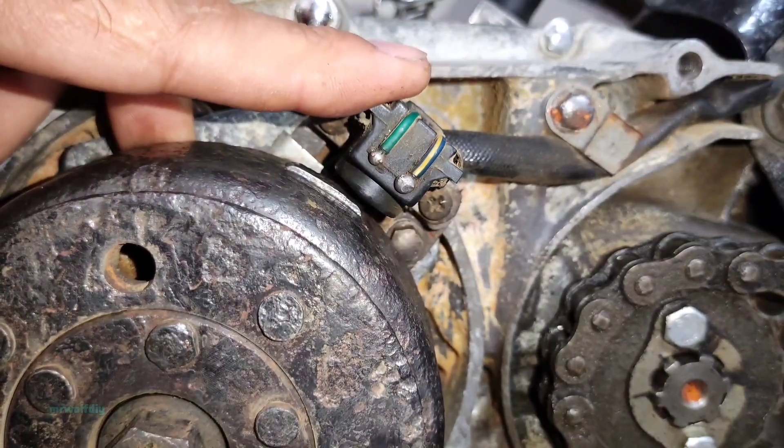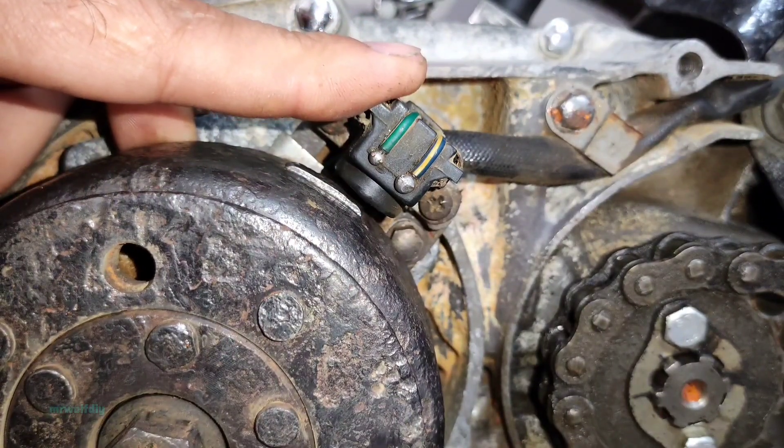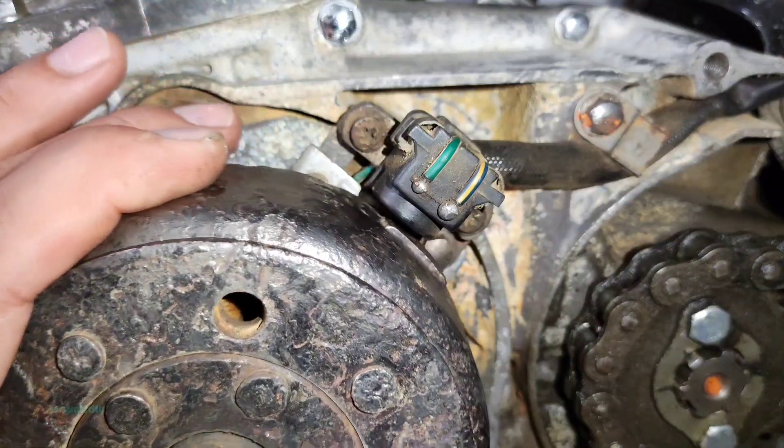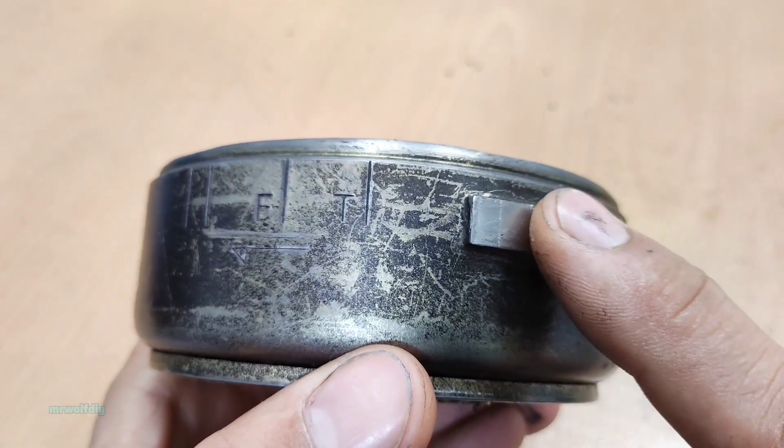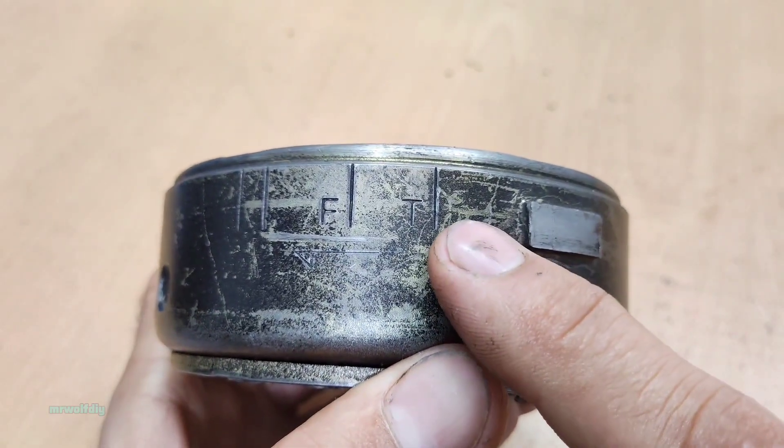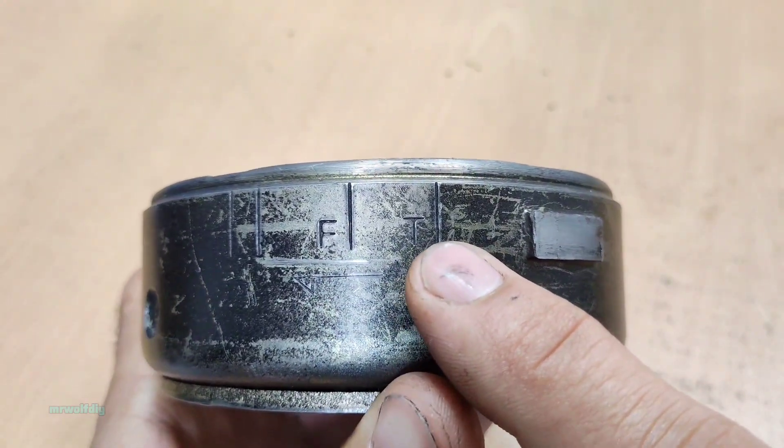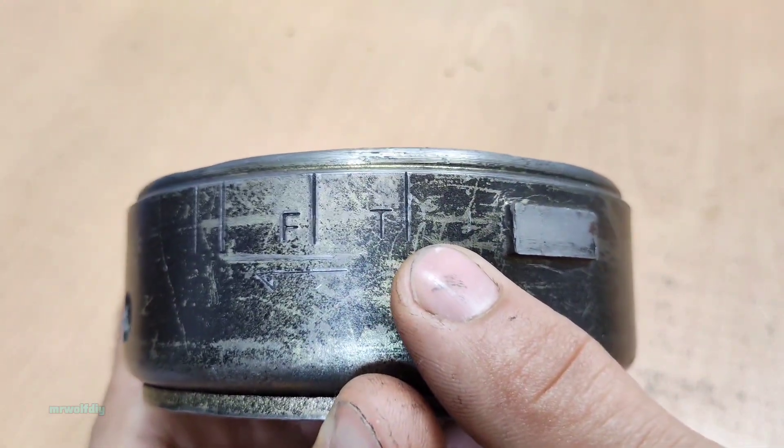When that happens, the pickup generates a small AC pulse voltage and sends it to the ignition unit. These metal tabs are set up to trigger the pickup just a few degrees before top dead center. It's a timing mark, you can see.